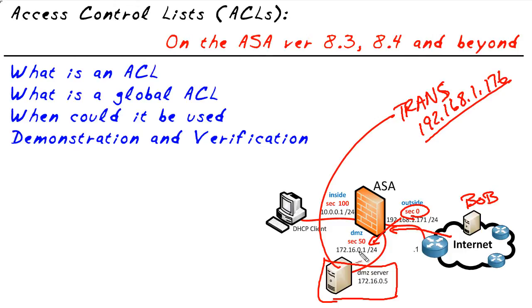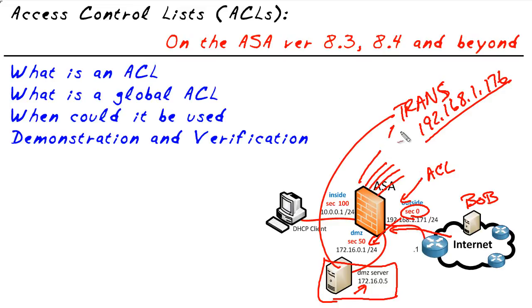One way of solving that is with an access control list. We could create an ACL that says: permit traffic from anywhere on the Internet if it's destined to this server and the destination port is TCP port 80 for web services. But if we have five or six new interfaces with users on all of them that also want to come in, we'd have to create five or six more access lists — one for each interface. Instead, if we have a common need of allowing port 80 to this web server, we could use something called a global ACL.